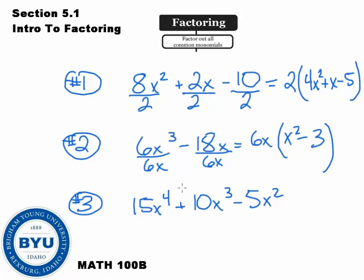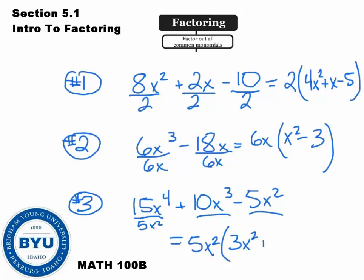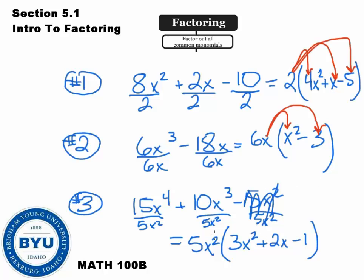For number 3, we have a trinomial — three terms. Looks like 5 goes into all of them, and x² is our lowest power since they all have x's. So 15x⁴ divided by 5x² gives us 3x² (15÷5=3, x⁴÷x²=x²). Dividing the next term by 5x² gives 2x. And dividing the last by 5x² gives -1. Don't forget to put the -1 — some people say the terms just cancel and you get 0, but no — they cancel and you get 1. You can always check your answers by distributing the GCF back into the parentheses to verify you get the original polynomial.